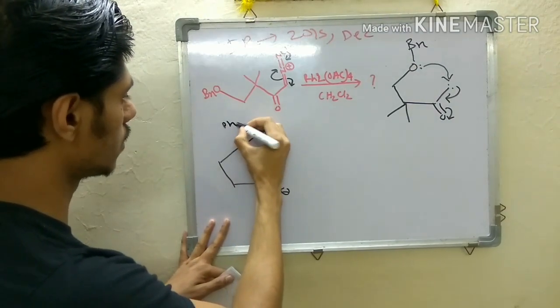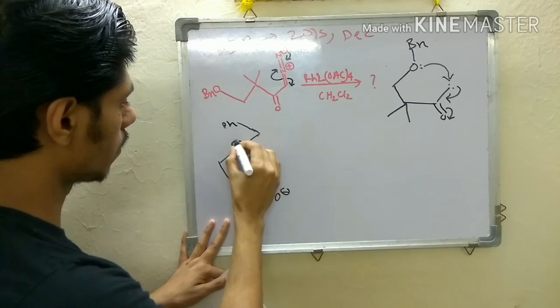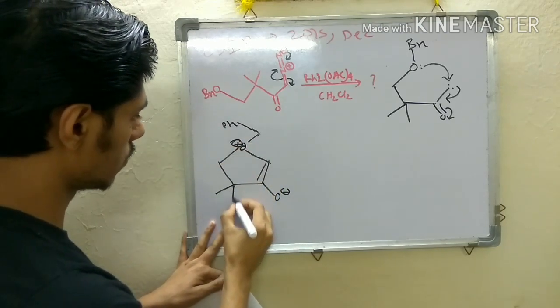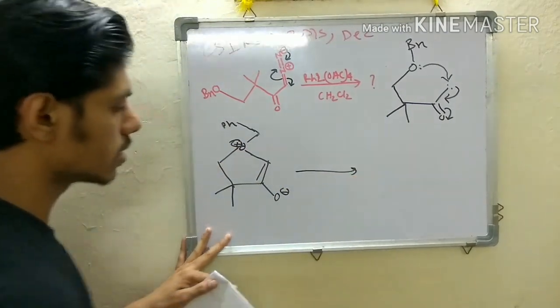So you have your OBn group here - the Bn group will be like this, the PhCH2 - and here will be a formal positive charge. Here it has two methyl groups.